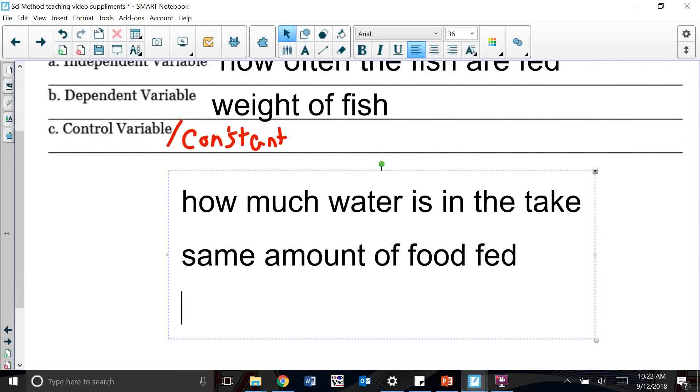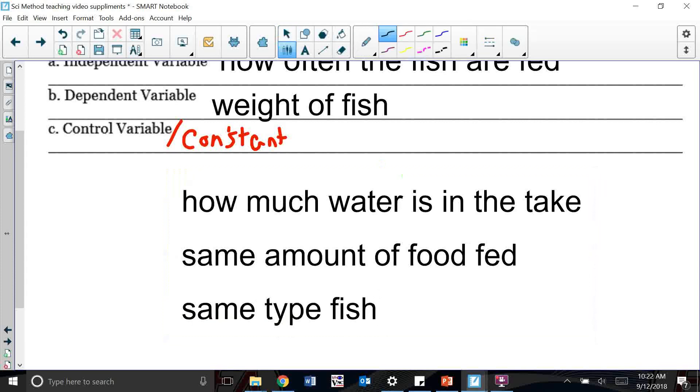If I am feeding fish, I shouldn't have tank one be a piranha and tank two be a crocodile. So we want to make sure to use the same type of fish. All those are things that we need to think about when we are doing our experiment. These are our constants, things that have to remain the same between both your experimental group and your control group.